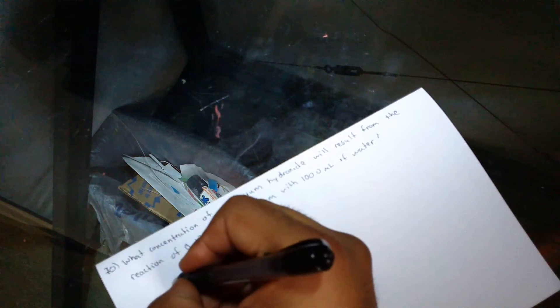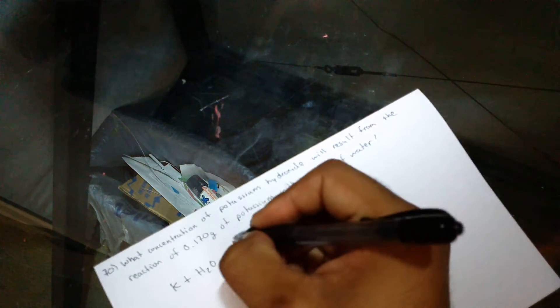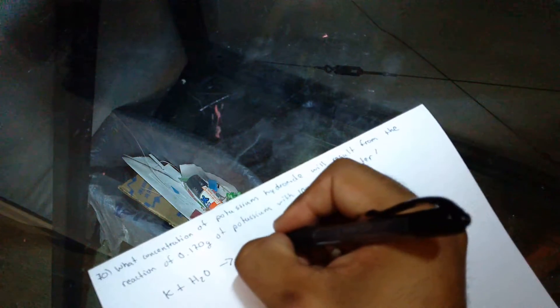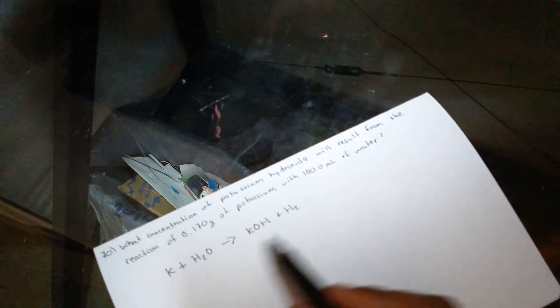Alright, so we've got to get our equation. We're going to have potassium plus water yield potassium hydroxide. Now we're going to see if we're going to balance our equation.